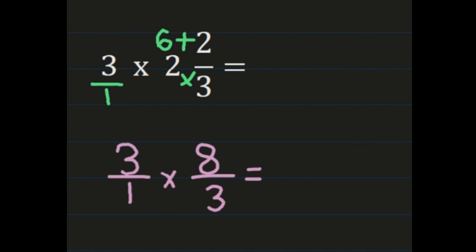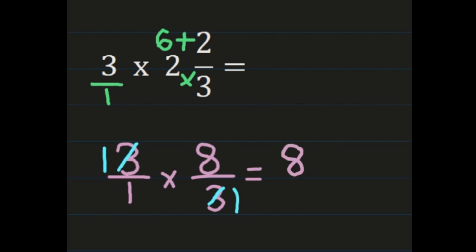I notice that 3 and 3 share a common factor of 3, so 3 divided by 3 is 1 for both. Multiplying the numerators: 1 times 8 is 8. Multiplying the denominators: 1 times 1 is 1. So we get 8 over 1, which is the whole number 8. Our product is 8.